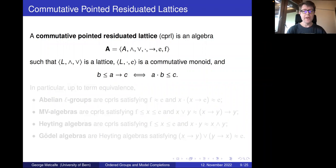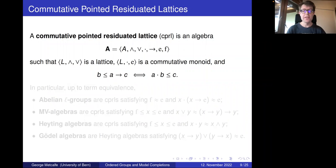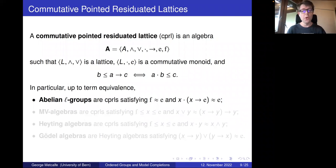I'm going to focus in this talk on the commutative pointed case. I speak about commutative pointed residuated lattices, or CPRLs for short, which consist of a lattice, a commutative monoid with also an implication or arrow that satisfies this residuation condition: B is less than or equal to A arrow C if and only if A times B is less than or equal to C. This provides a very general class. In particular, up to term equivalence, lattice-ordered abelian groups are just CPRLs where F and E are identified and X times (X arrow E) is E. So X arrow E in this setting is then the group inverse operation.